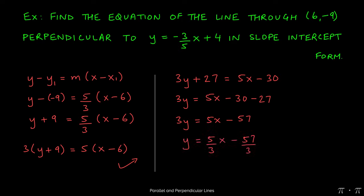They both serve the same purpose. So this gives us y = 5/3x - 57/3.